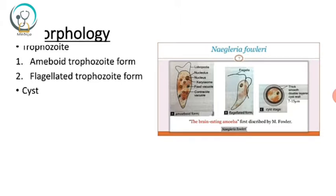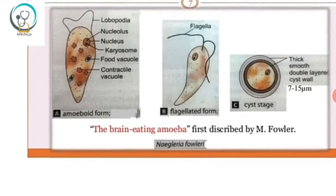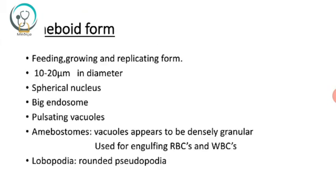Regarding its morphology, there are two morphological forms: the trophozoite and the cyst. The trophozoite form is again divided into two: the amoeboid trophozoite form and the flagellate trophozoite form. There are three pictures of these morphological forms — the amoeboid form, the flagellate form, and the cyst stage. The amoeboid form shows structures such as lobopodia, nucleus, karyosome, food vacuole, and contractile vacuole. The flagellate form has two flagella, and the cyst has a thick smooth double-layered cyst wall.